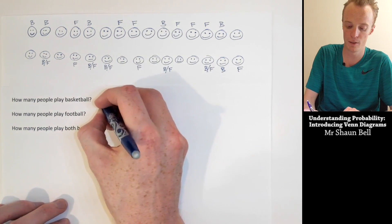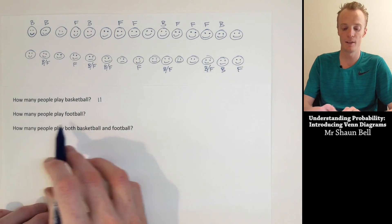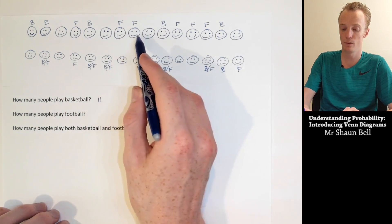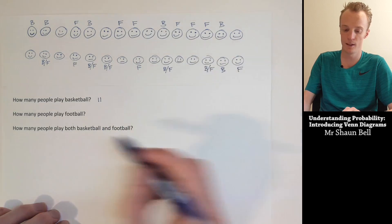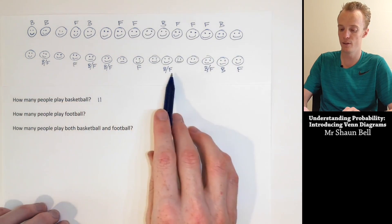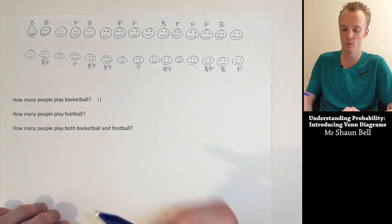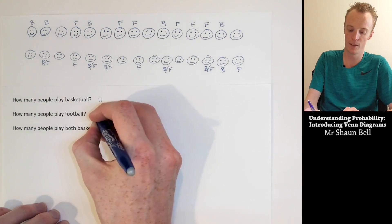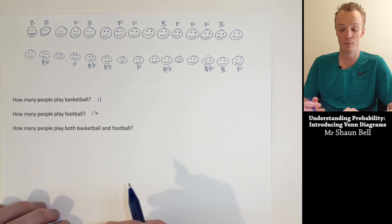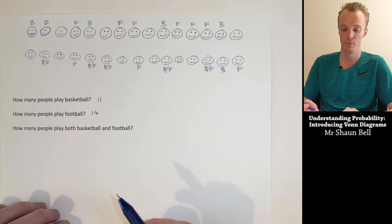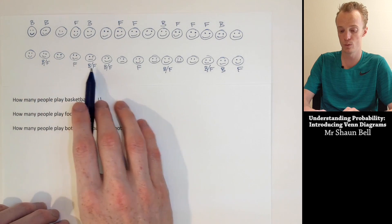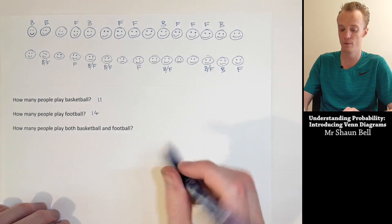Now counting those with an F, we find 14 of these people play football. How many of these people play both basketball and football? That's our B/F group. Counting them up, we get 5 people that played both.